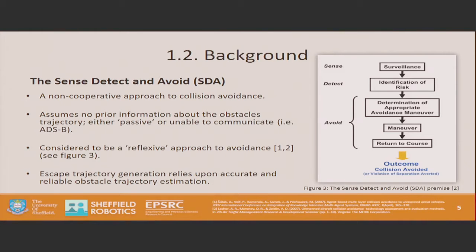This is accomplished through surveillance — the active sensing of the surroundings — identification of risk, determination of whether or not negotiation is possible or necessary, and determination of an appropriate collision avoidance approach or escape trajectory.